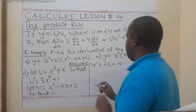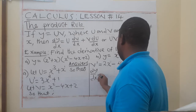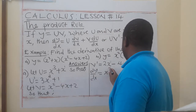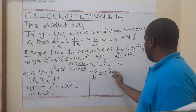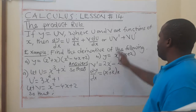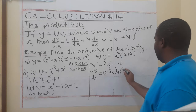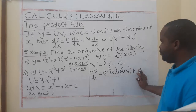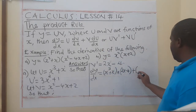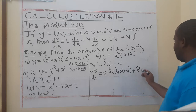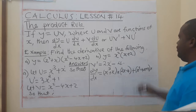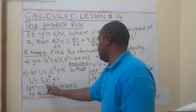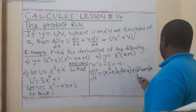So now we write: dy/dx equals u times v-prime plus v times u-prime. Starting with u: x³ + x, multiplied by the derivative of v — open bracket 2x minus 4 — plus v, which is x² - 4x + 2, multiplied by u-prime, which is 3x² + 1.